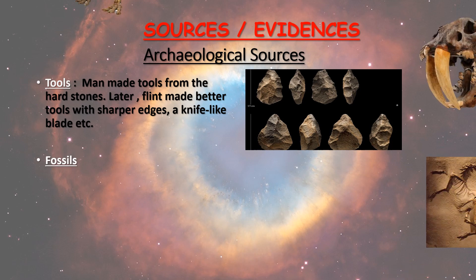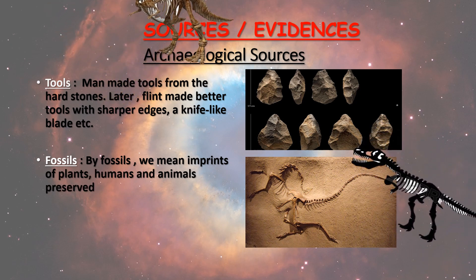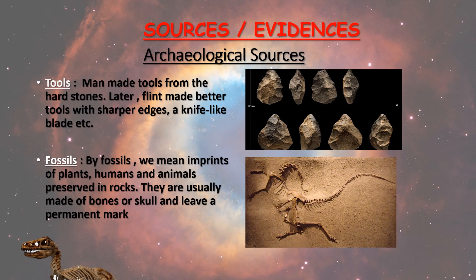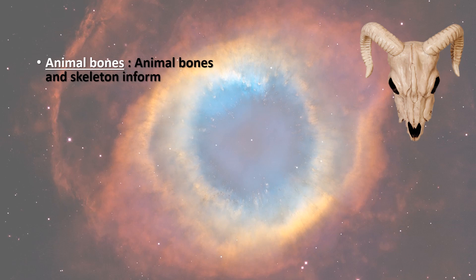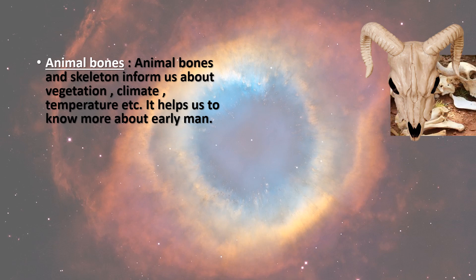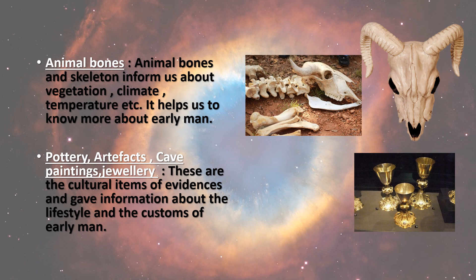Fossils are also preserved evidences. For example, we know about dinosaurs' existence as we found their remains, which include bones, teeth, etc. In order to find out what people ate in the past and what kind of species existed at that time, these evidences were very useful. Next is pottery, artifacts, cave paintings, and jewelry. These are the cultural items of evidence and they give information about the lifestyle and customs of early men.